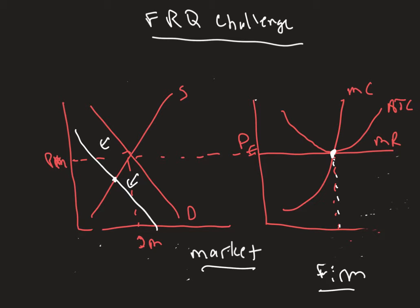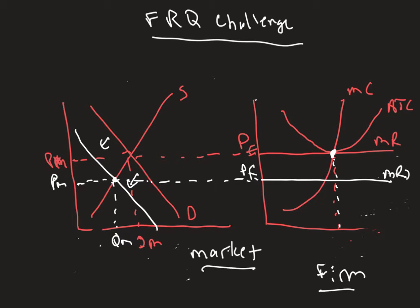This question is much like one you had on your free response recently. With the decrease in demand, the price in the market has decreased and the quantity in the market has also decreased. The firm now has a new MR curve and a new price. The old MR curve is essentially gone. Because of this new lower price, we now have a new quantity QF1 — the profit maximizing quantity where MR equals MC is at a lower quantity.